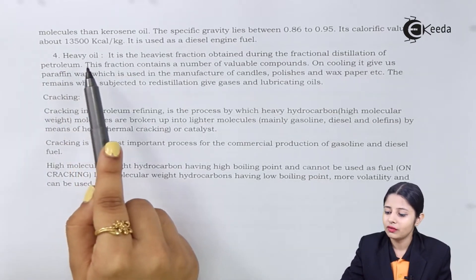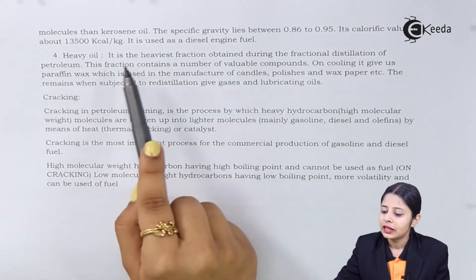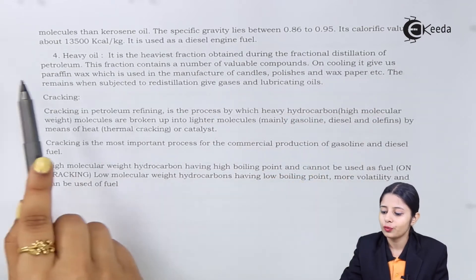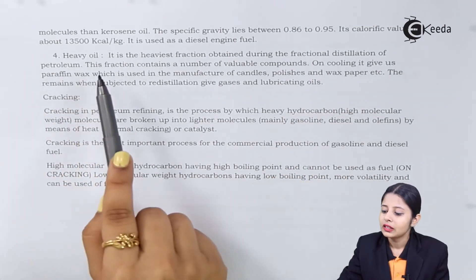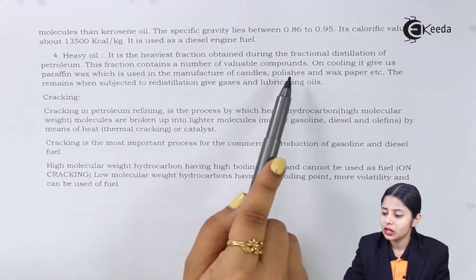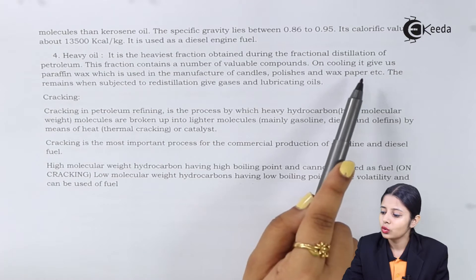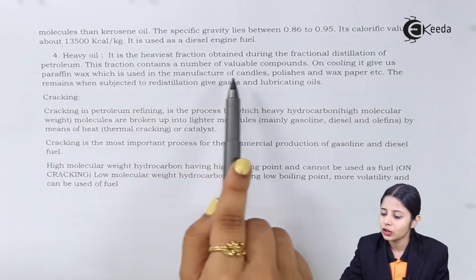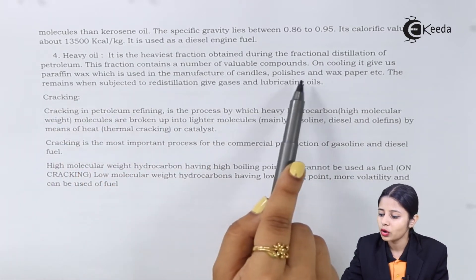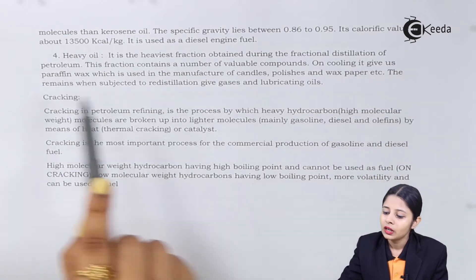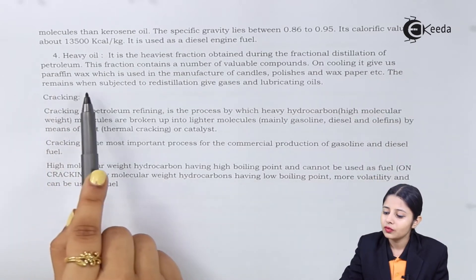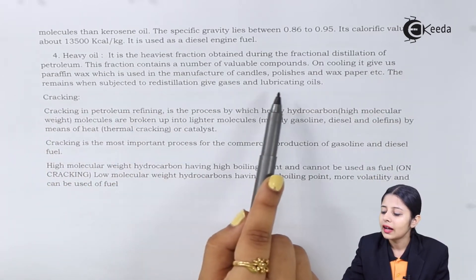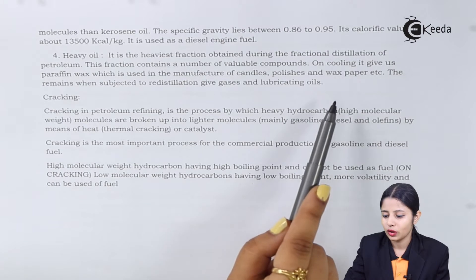The last fraction is heavy oil — the heaviest fraction obtained during fractional distillation of petroleum. This fraction contains a number of valuable components. On cooling it gives paraffin wax, which is used for manufacture of candles, polishes, and wax papers. The remains when subjected to redistillation give gases and lubricating oils.